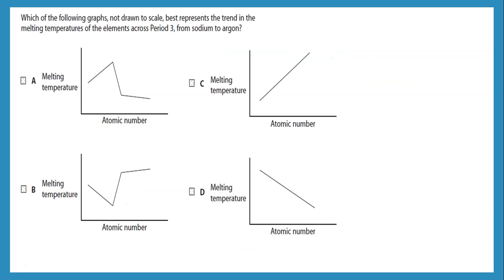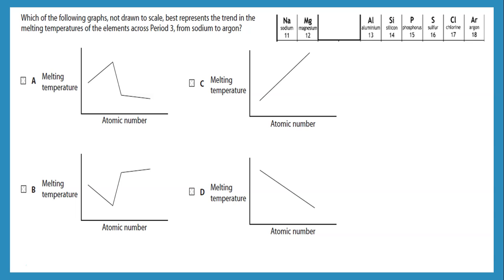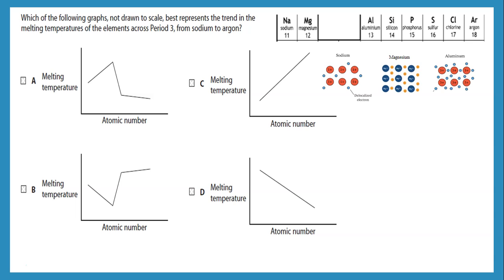This question says: which of the following graphs, not drawn to scale, best represents the trend in the melting temperature of the elements across period 3? Again, we're looking at period 3 — sodium, magnesium, aluminium, silicon. These have an increasing melting point due to an increase in the number of delocalized electrons per atom. Then we go into group 4, which is the highest. Then we go down to simple molecular structures with a lower melting point. So my choice is A.